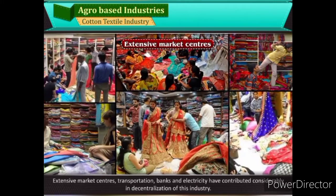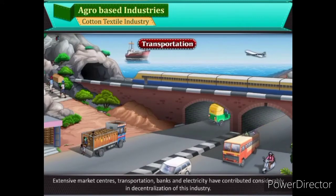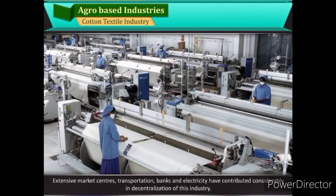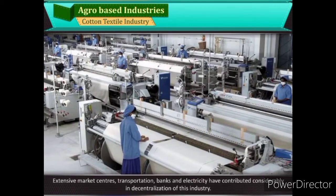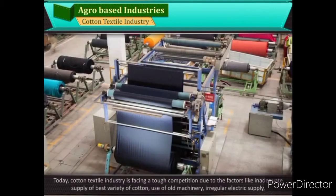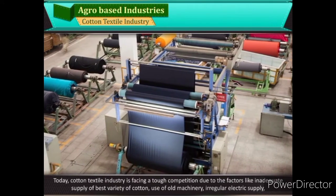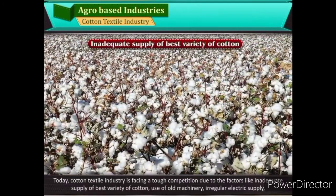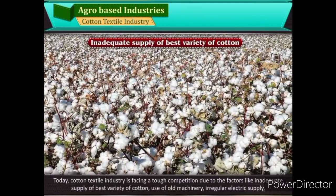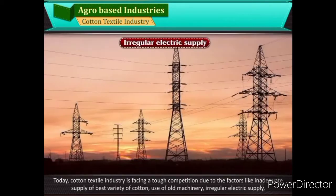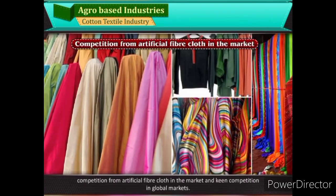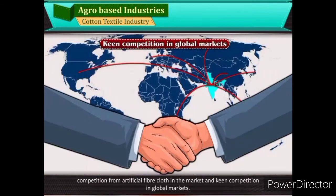Extensive market centres, transportation, banks, and electricity have contributed considerably to the decentralisation of this industry. Today, cotton textile industry is facing tough competition due to factors like inadequate supply of best variety of cotton, use of old machinery, irregular electric supply, competition from artificial fibre cloth in the market, and keen competition in global markets.